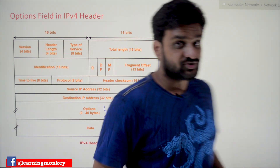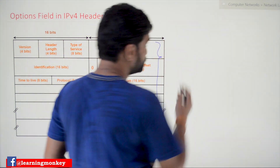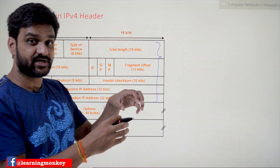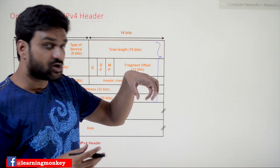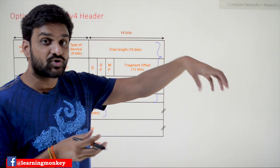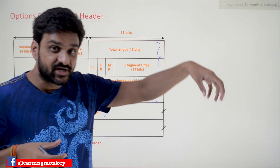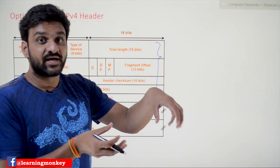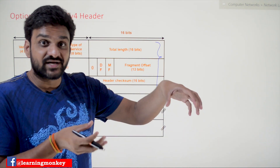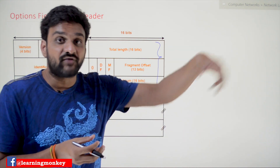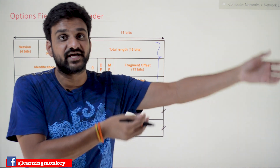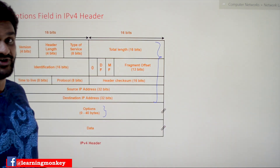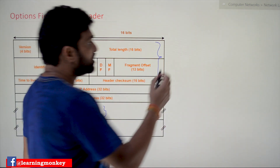Multiple options can be accommodated. For example, if you want to accommodate two or more options in one single datagram, that is possible. Options are concatenated one after the other, and that is how things get arranged within the options field.